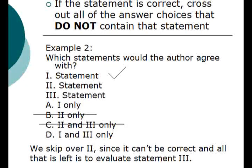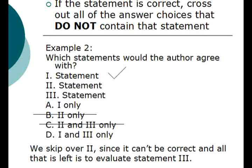If you are sure that a statement is correct, cross out all of the answer choices that do not contain that statement. Here, if we are confident that statement one is correct, that would be our starting point. We cross out answer choices B and C because they don't contain statement one. Looking at the remaining answer choices A and D, we see that statement two is not included, so it must be incorrect. Since evaluating statement two will not help us choose between A and D, we skip it, and all that is left to evaluate is statement three.